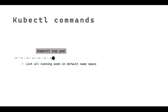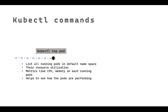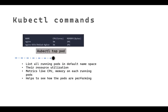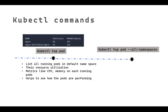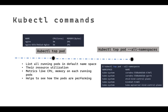Similar to `kubectl top nodes`, you can also use `kubectl top pod`. Here you will see all the running pods in the default namespace, showing CPU and memory utilization. If you want to expand beyond the default namespace, you can use `kubectl top pod --all-namespaces` to list all pods across all namespaces, or you can specify just a specific namespace.